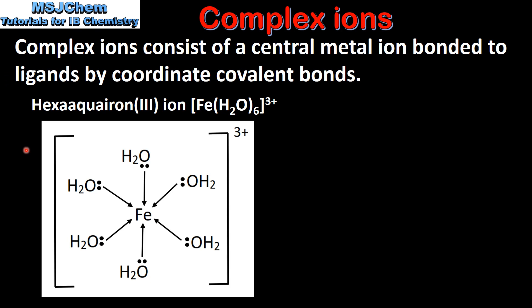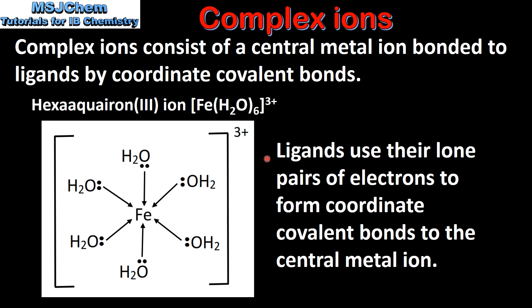Here we have an example of a complex ion which is the hexaaquairon(III) ion. The central metal ion is the iron(III) ion and the ligands are water molecules. The ligands use their lone pairs of electrons to form coordinate covalent bonds to the central metal ion.